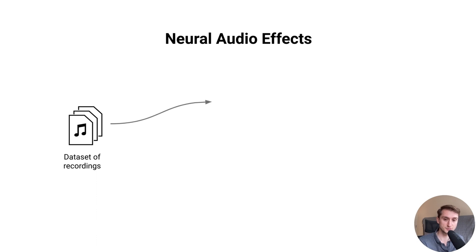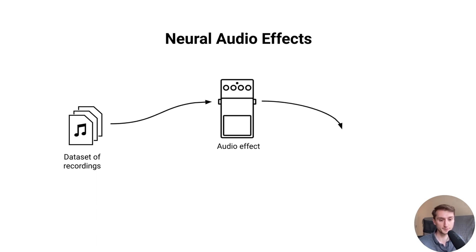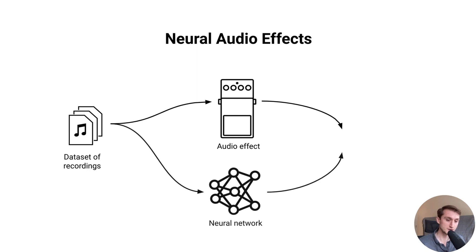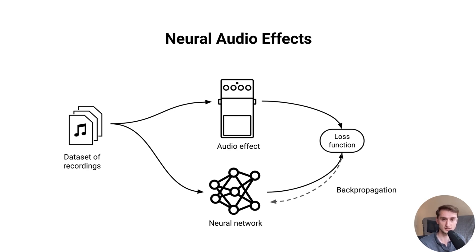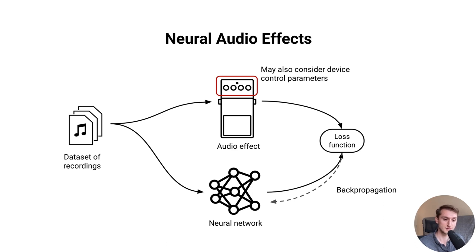Neural audio effects use a neural network and a dataset to automatically create emulations of audio effects. This works by taking recordings, playing them through some audio effect, and recording the output. We then feed those same input recordings to a neural network and train it to produce the same output as the real audio effect, using a loss function and backpropagation. We may also model device control parameters by recording outputs at different parameter values and feeding those parameters to the network.